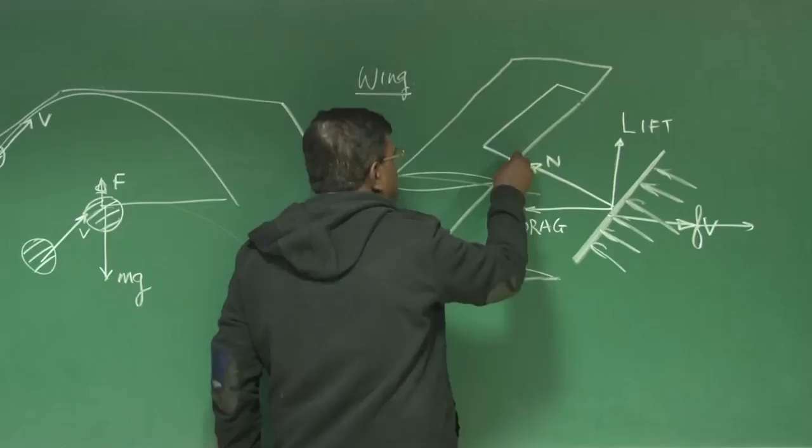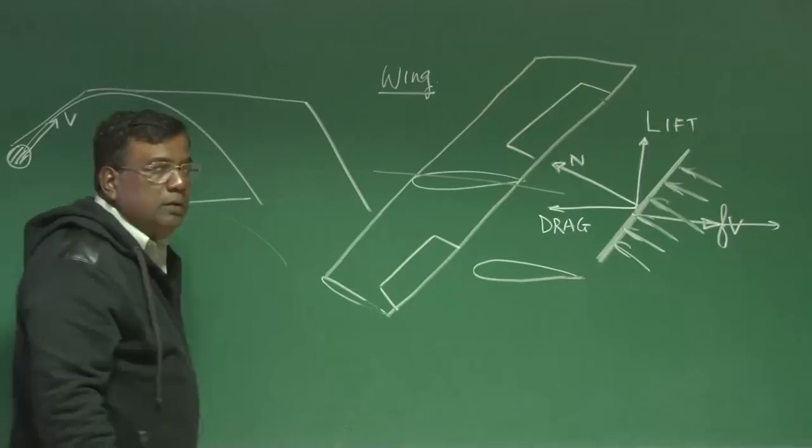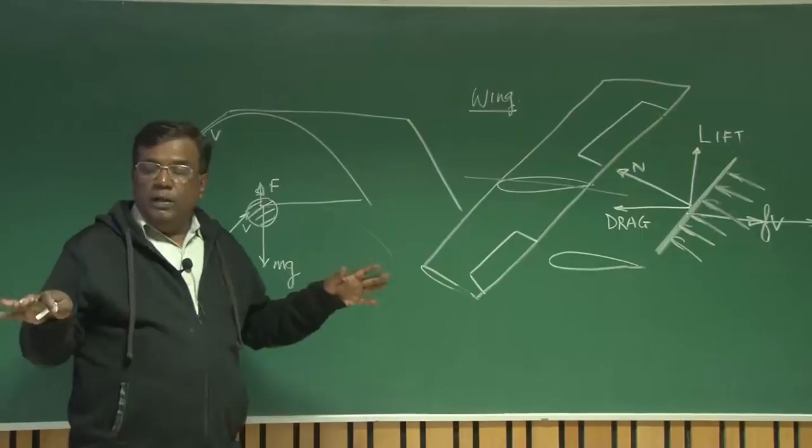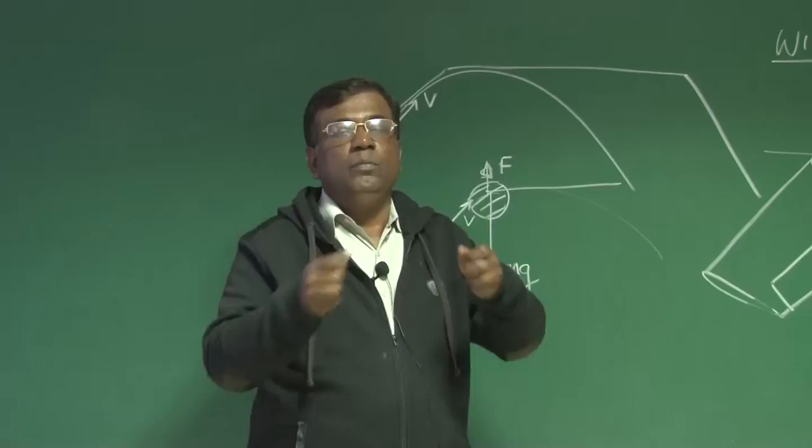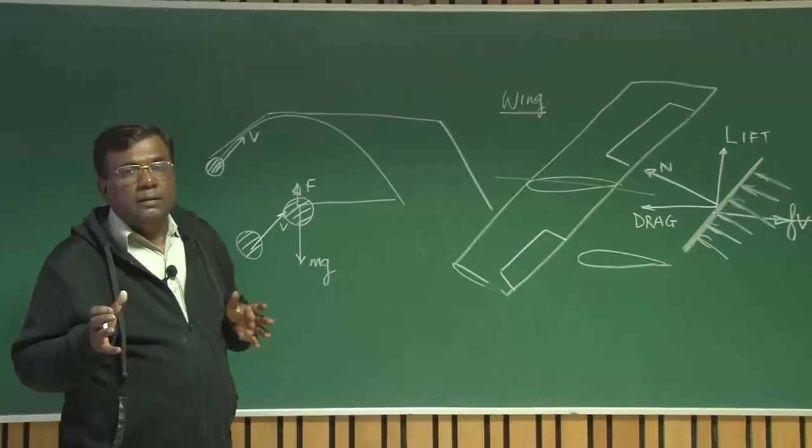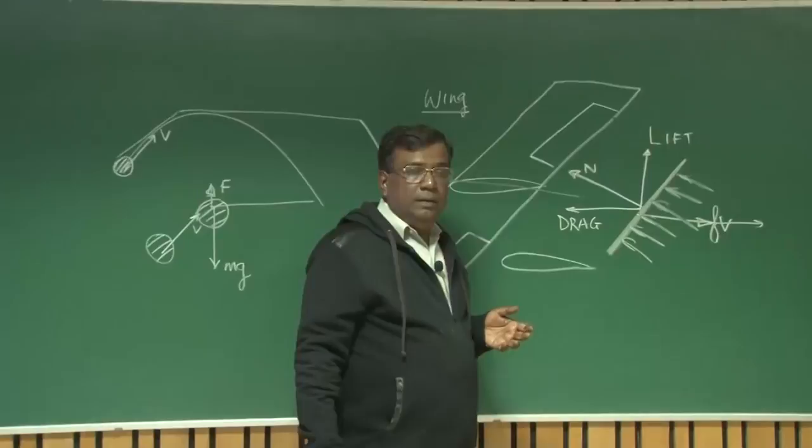Then you have seen, there are surfaces called aileron which moves up and down like this. So, maintenance man will look for whether as per the manual, how much deflection it should have for a particular stick movement, whether they are having or not or there are some misalignment. Right? Because if there are some misalignment, then the pilot will have a different field.